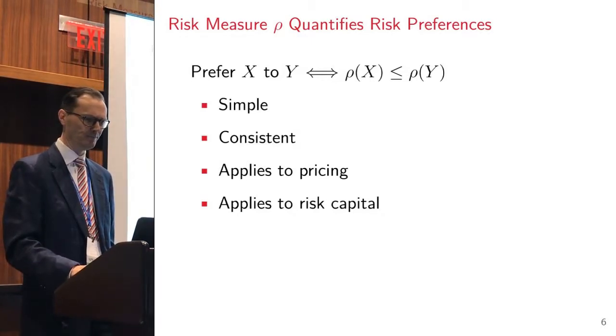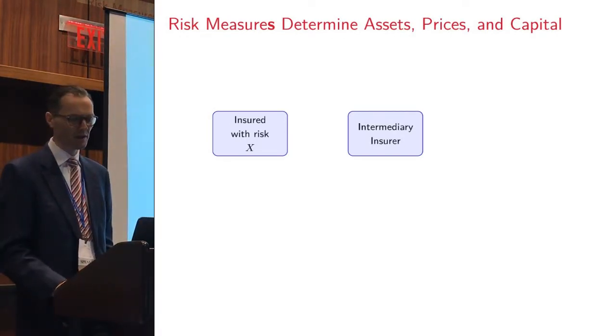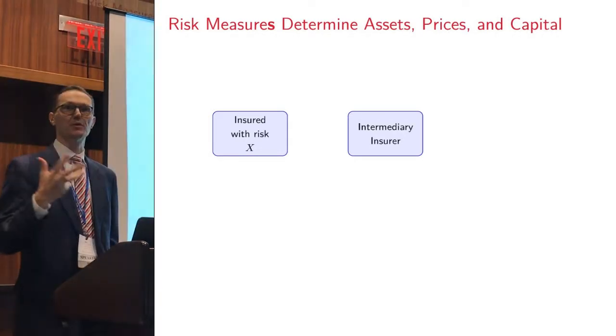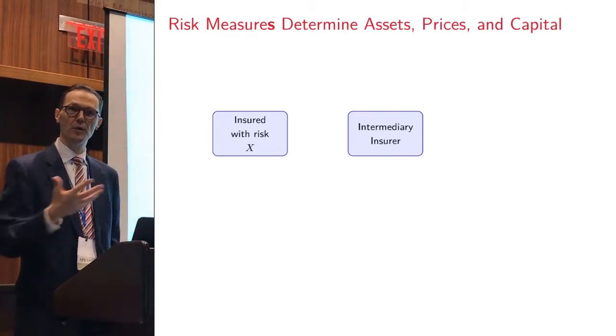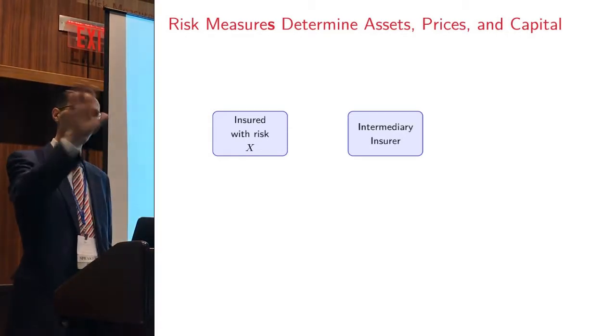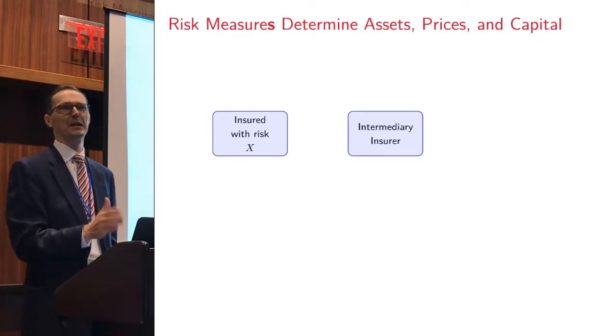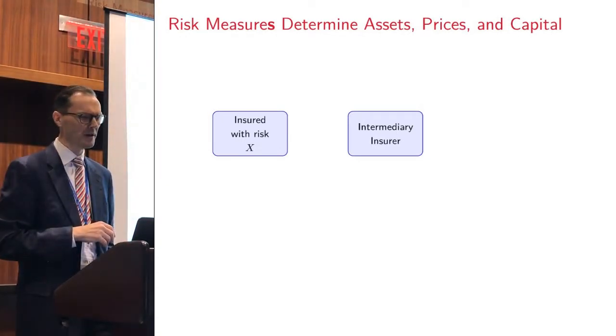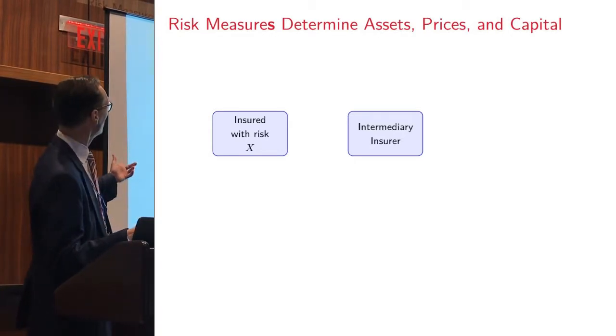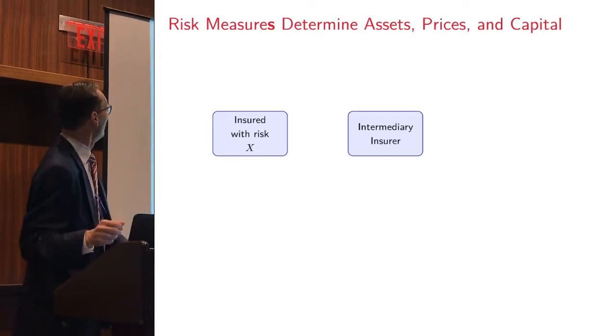As we went through this, one thing that we debated a lot internally was you've got this idea of risk measures being used to determine capital and risk measures being used to determine pricing. These are somewhat two different views. In particular, we were struggling with if I use TVaR, tail value at risk, it gives me one very conservative view of risk, and the implications for pricing are I very quickly just want a full limit loss on any line. But we know we don't price like that.